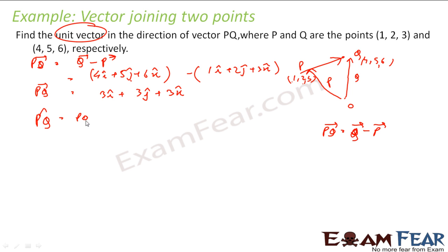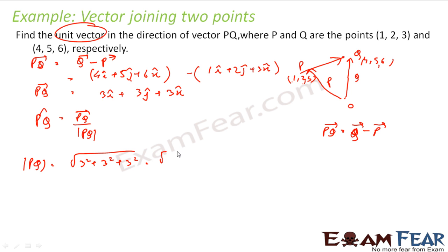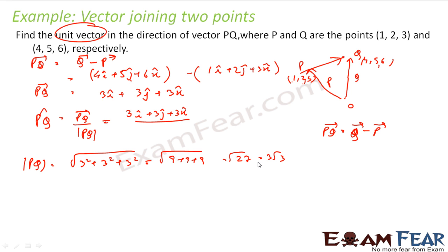The unit vector is PQ vector divided by the magnitude of PQ vector. Let us find the magnitude: root of (3² + 3² + 3²) = root of (9 + 9 + 9) = root 27 = 3√3. So the unit vector PQ is (3i + 3j + 3k) / 3√3, which becomes i/√3 + j/√3 + k/√3. And that is my answer.